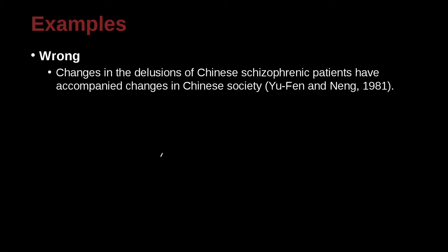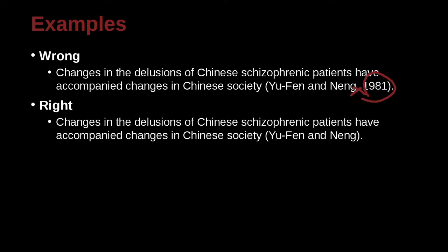Changes in the delusions of Chinese schizophrenic patients have accompanied changes in Chinese society (Yufeng and Neng, 1981). Here we have a problem — a comma and a date that do not belong in MLA. For MLA, we just have the names with the conjunction 'and.' Remember, no ampersand like in APA — we use the word 'and' — and no date. We could include a page number, but here we're just citing the whole work.